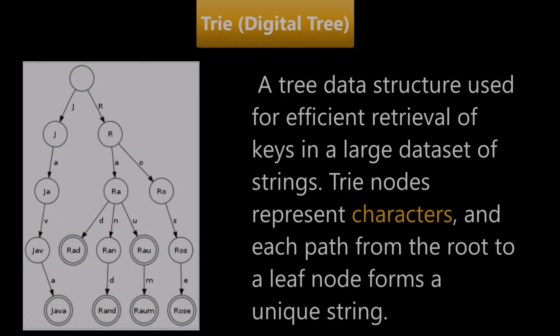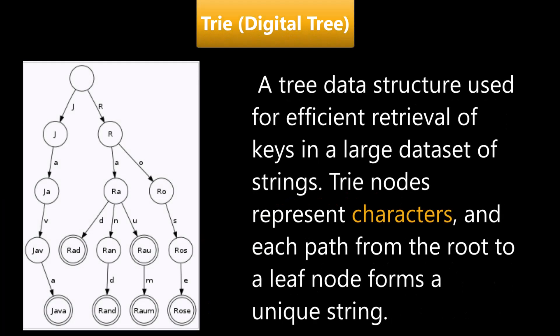Now let's talk about trie, which is also called digital tree or prefix tree. Trie is a tree data structure used for efficient retrieval of keys in a large data set of strings. Trie nodes represent characters, and each path from the root to a leaf node forms a unique string.